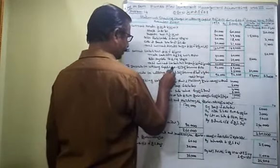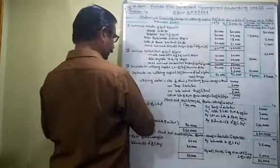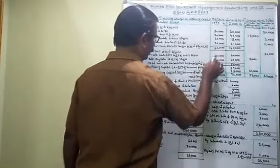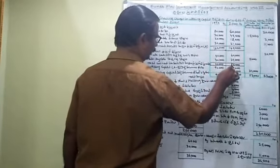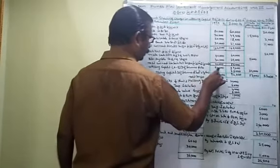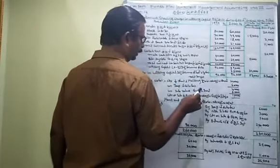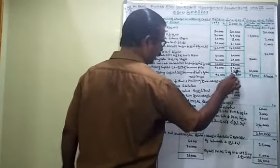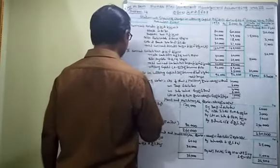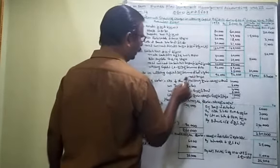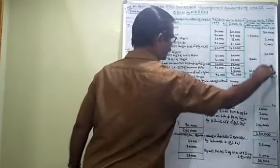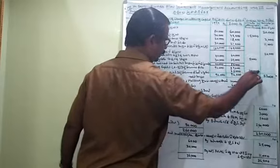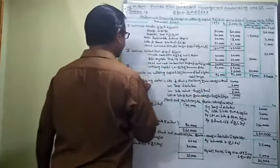Roman numeral III: increase in working capital (A minus B). Working capital figures: 20,000 and 20,000; 40,000; 20,000; 20,000; 20,000; 50,000; 13,000; 25,000; 13,000; 30,000; 50,000; 39,000. Then the decrease in working capital: 20,000 and 30,000. The decrease in working capital is accounted for.